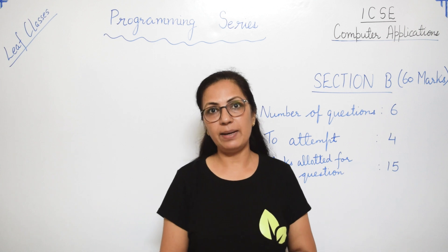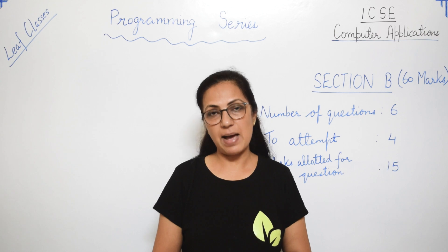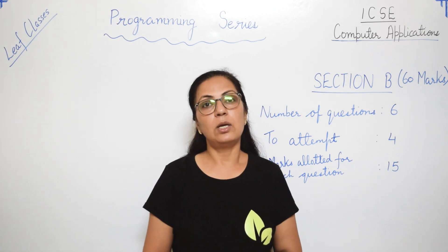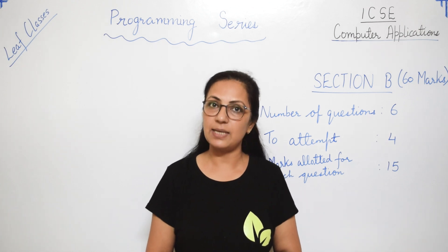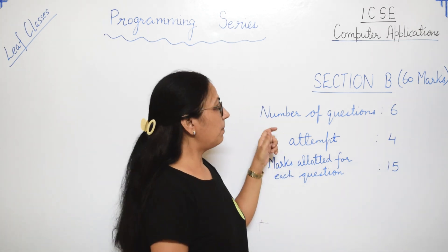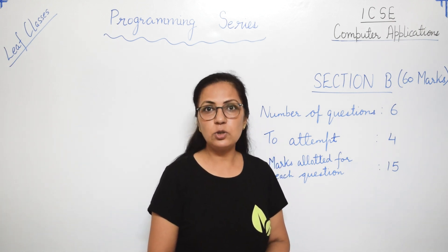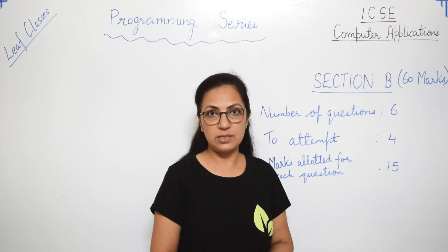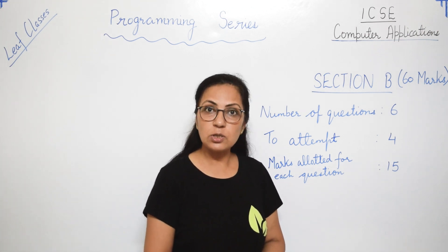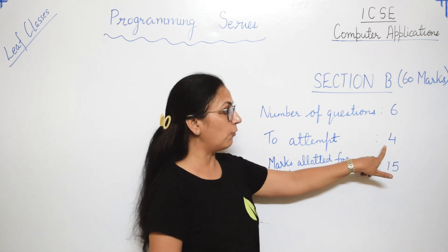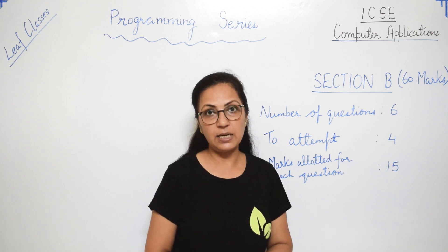You know the exam pattern for Computer Application — you have a 100-mark paper with two sections. Section A is 40 marks and Section B is 60 marks. In Section B, there are six questions in total, though one or two times only five questions were asked, and you have to attempt four out of six.